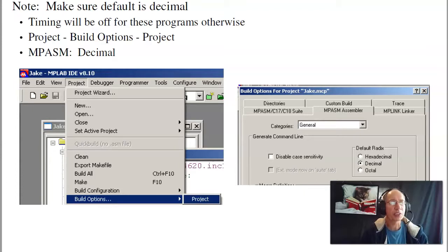Now, for this code, we're going to do things like how to build a piano. To get the notes right, you have to make sure that you're in decimal mode. So make sure that you go to Project, Build Options, Project. And under MPASM, make sure you're in decimal. The reason being is if you have a counter, and I'm counting to 100, 100 decimal is different than 100 hex. The default is hex, so you need to change it to decimal.